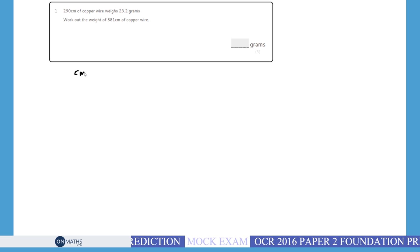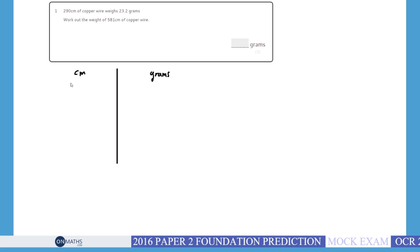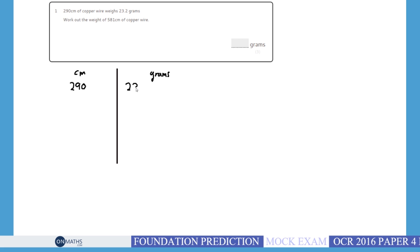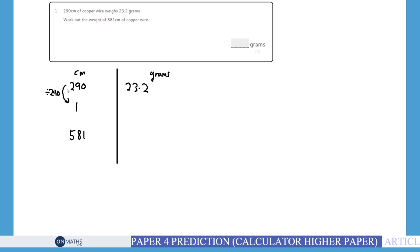We're going to have centimeters on this side and grams on this side. Let's put a black line going down to split the two up. So this says it's 290 centimeters, and this one is 23.2 grams. Now, we want to get 581 centimeters—that's where we want to get—and we want the amount of grams that's there. What we can do is get what one centimeter is worth by dividing this by 290. But if I divide that side by 290, I've got to divide this side by 290.